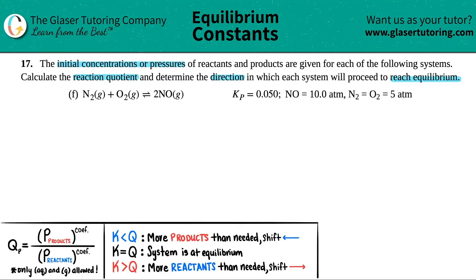They give me an equation here for letter F. I see that there are already coefficients so I'm going to assume it's balanced. So let's just write out that equation. I got N₂ gas plus O₂, and that's also a gas, and this is allowed to come to equilibrium with 2NO and that's a gas.